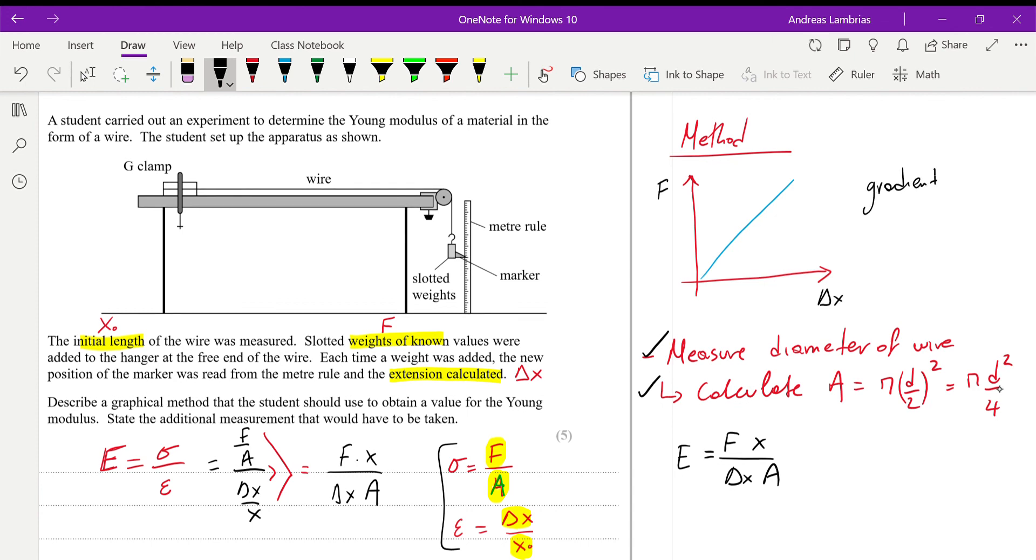So, the gradient is giving us this part of the formula. Therefore, we need to multiply the gradient times the initial length, and we need to divide that by the area. So, that would be method two. So, any of these methods will give you full marks. Can you see that involves quite a few steps.